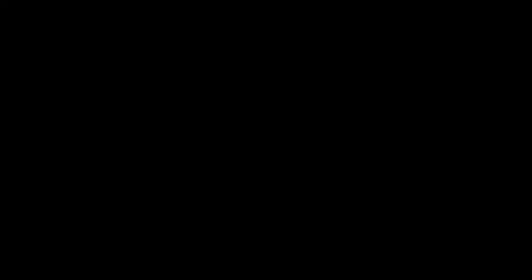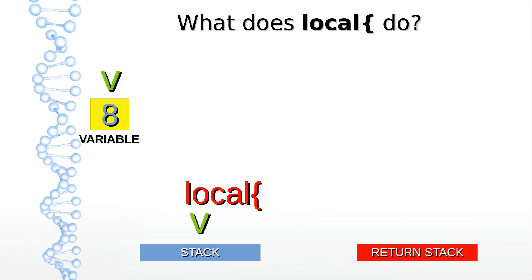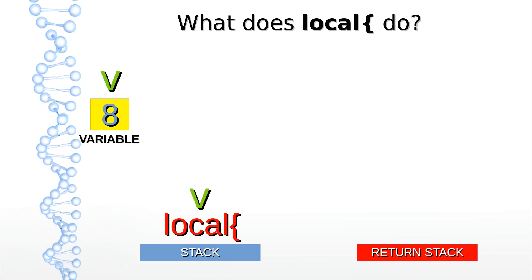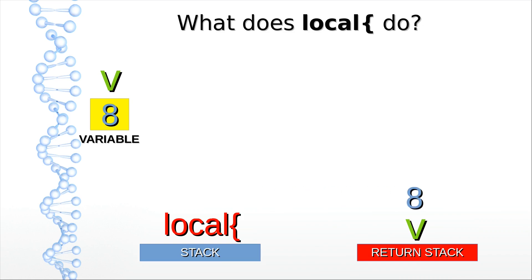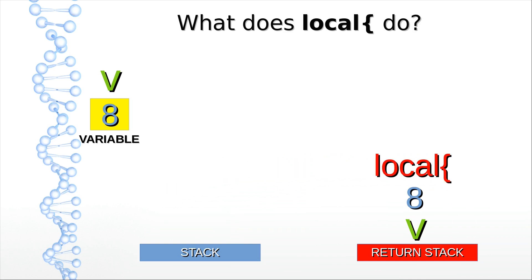So let's dive right in. We just invoked local. We got an initialized global variable, and the address of this variable is on the stack. The return address of the local invocation is on the return stack. We transferred that return address to the stack and then swapped the return address and the variable address. With the variable address at the top of the stack, we duplicate it and then transfer it back to the return stack — that's the first part of the stack frame. With the remaining variable address, we retrieve its value and transfer it to the return stack. Finally, we transfer the return address and put it in its rightful place on the return stack.